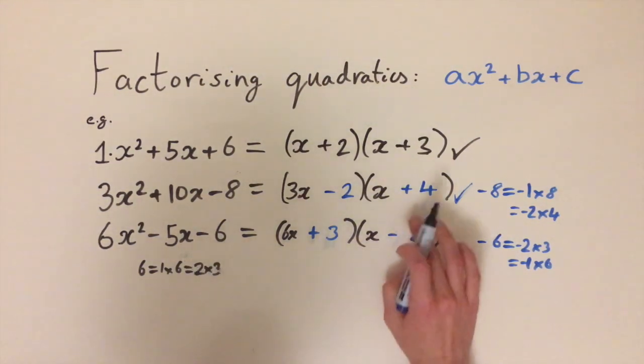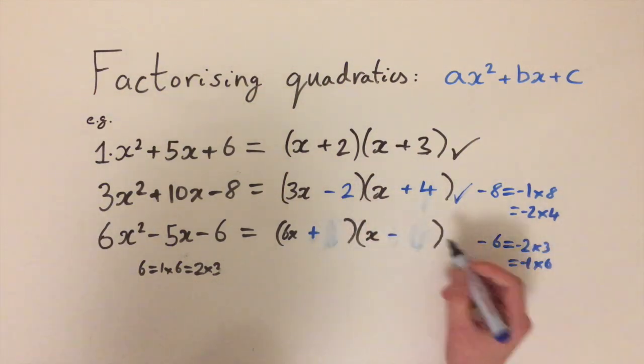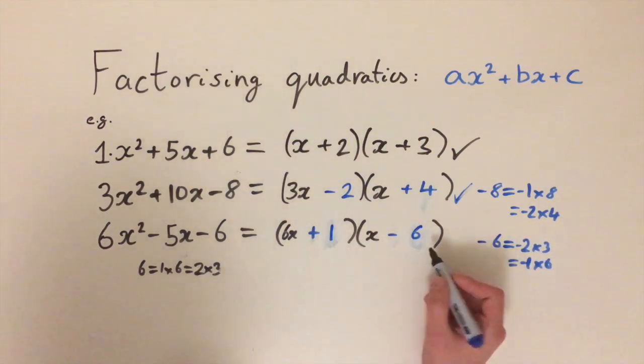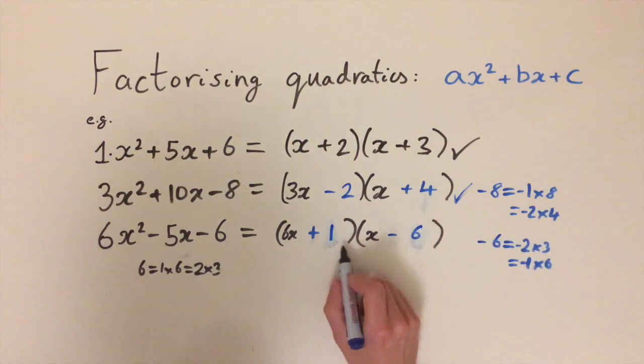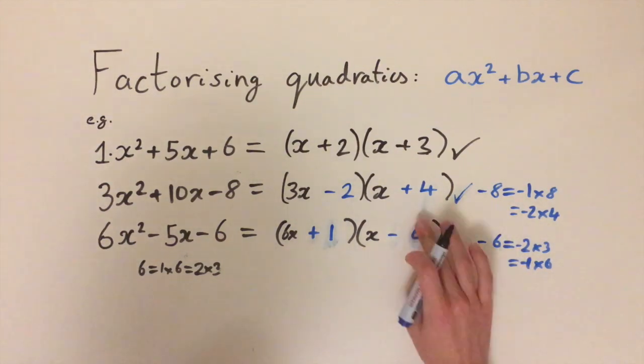So a bit closer but not what we want. The final thing we haven't tried is minus 6 and plus 1. Minus 36 plus 1x minus 35x. That isn't really going to give us what we want.